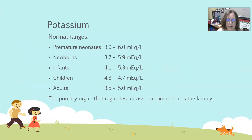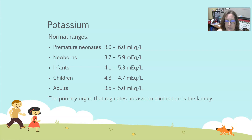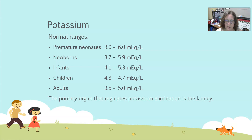Next is potassium. The normal ranges for a premature neonate are much wider than that of adults: 3.0 to 6.0 milliequivalents per liter. As they age into a newborn, it narrows a little to 3.7 to 5.9 milliequivalents per liter. In infants, it narrows even more to 4.1 to 5.3 milliequivalents per liter. In children, it's 4.3 to 4.7, and in adults it's 3.5 to 5.0 milliequivalents per liter.